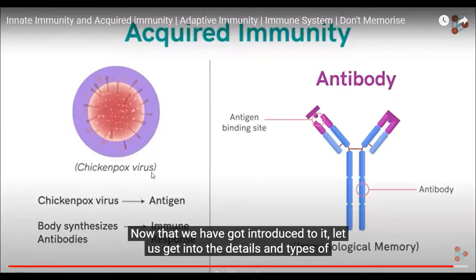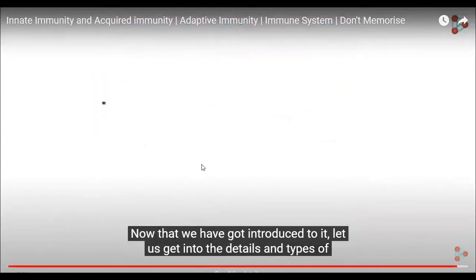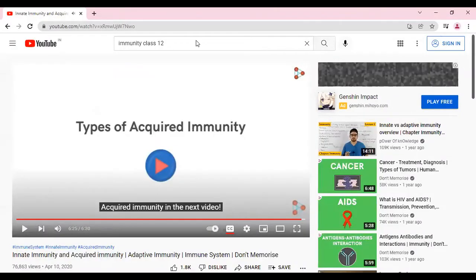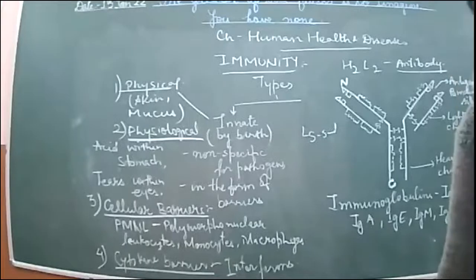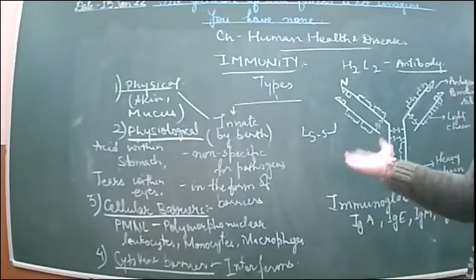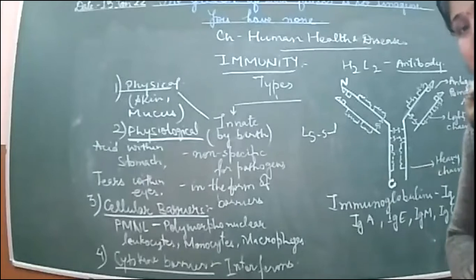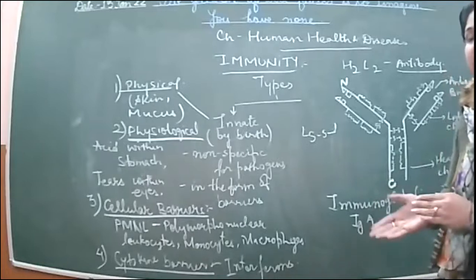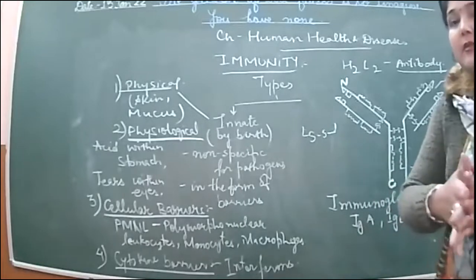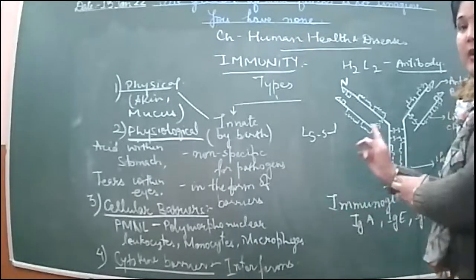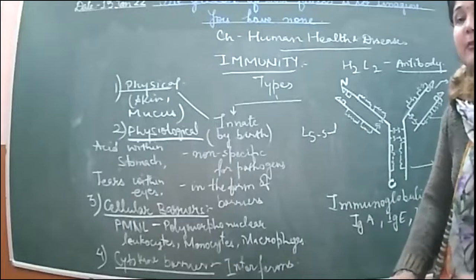Now that we have got introduced to it, let's get into the details and the types of acquired immunity in the next video. So is this clear? Any doubt? After listening to this particular video, I hope you have got this concept better fixed in your mind — that is, the two types of immunity: innate, which is present by birth, and acquired, which is developed during the lifespan. There was also an example given that the person learns from mistakes.